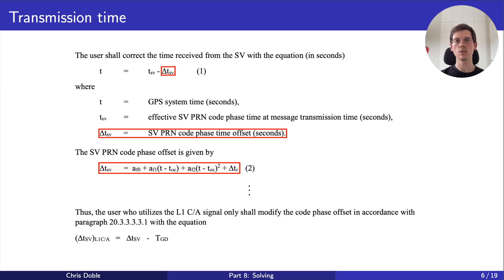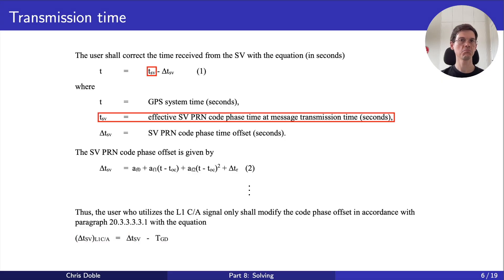Because we're only using the L1CA signal, we also need to apply a correction term. All of these equations can be implemented exactly as they're written in the spec. They use parameters from subframes 1 and 2, so we need to wait until we've received those. The only thing the spec doesn't explain is how to calculate that initial estimate, TSV. How do we do that?